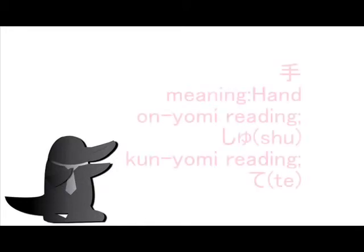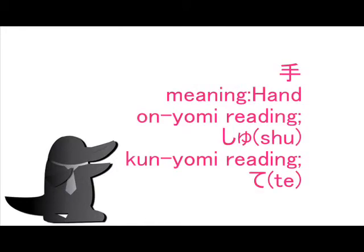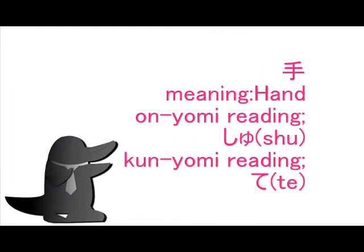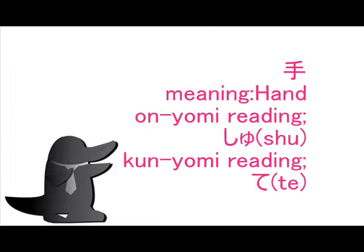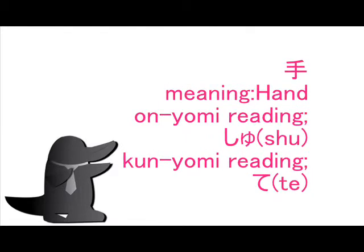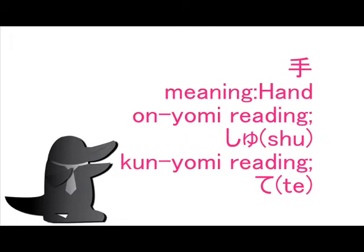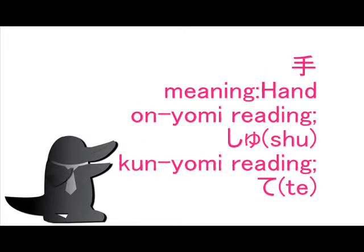Today's Japanese Proctable Kanji is this. The main meaning of this kanji is hand. In onyomi reading you can read 主. In kunyomi reading you can read 手. There is no okurigana for this kanji.